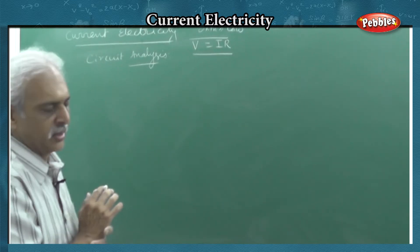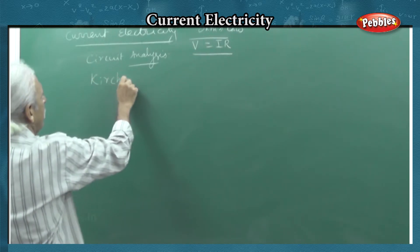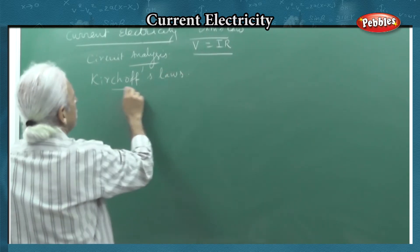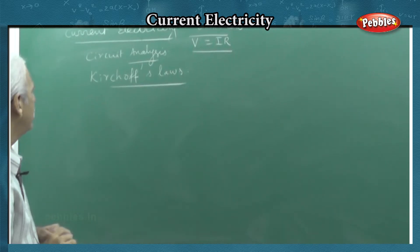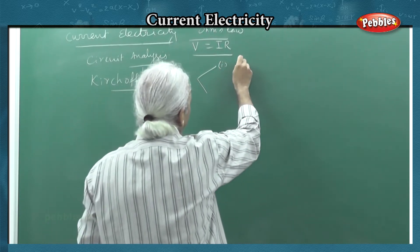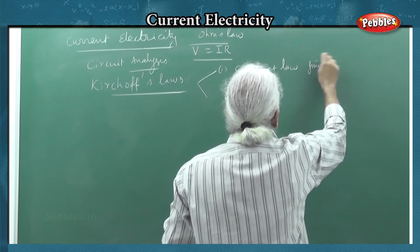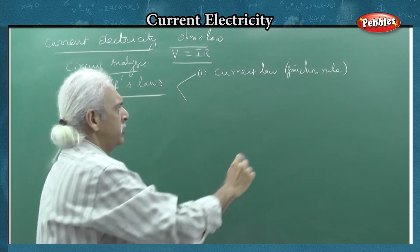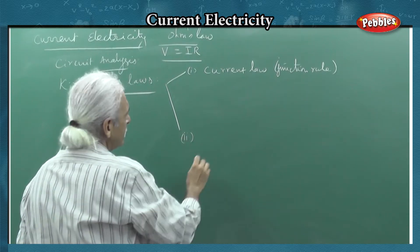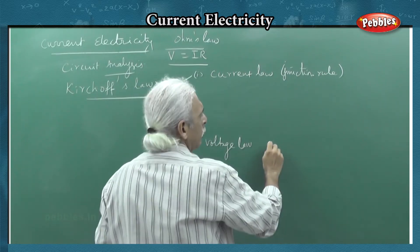Ohm's law is the basis, but there is another variation for circuits. This variation was given by the scientist called Kirchhoff. It is called Kirchhoff's laws of circuit analysis. There are two Kirchhoff's laws. The first one is called the current law, also known as the junction rule. The second law is called the voltage law, also called the loop rule.